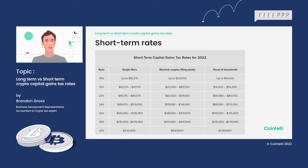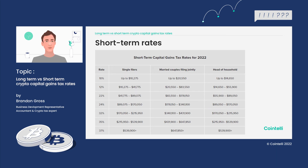For example, if you earned $40,000 in a year and from the last example you sold your asset and made a profit of $200, your total ordinary income would be $40,200. If you're a single filer, you would fall into the 12% bracket. The tax rates differ depending on your marital status, as you can see on the chart.